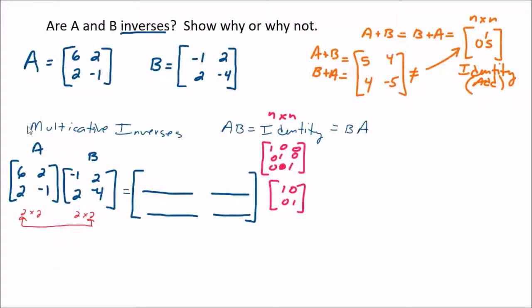To compute the row 1, column 1 entry, we take the first row of matrix A times the first column of matrix B: 6 times negative 1 plus 2 times 2. For the row 1, column 2 entry, we use the first row of A again but with the second column of B: 6 times 2 plus 2 times negative 4.